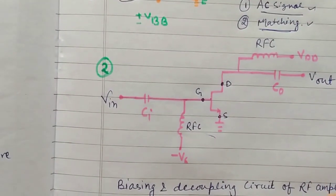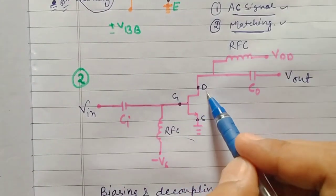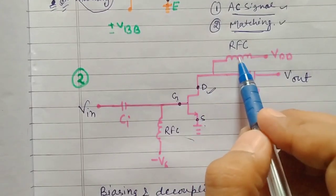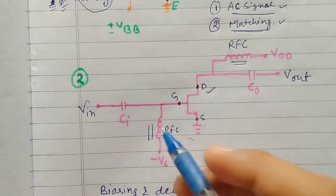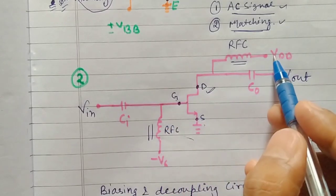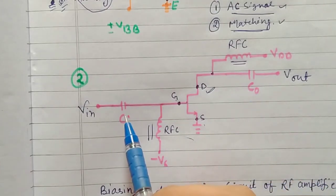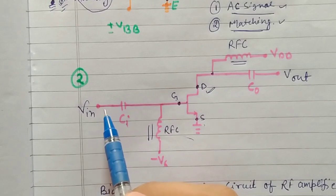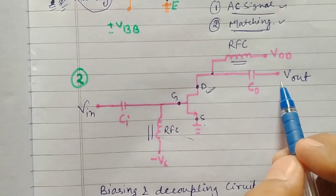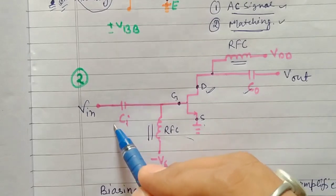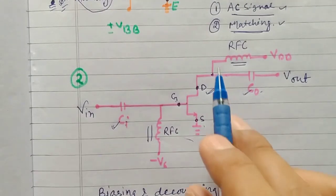The same principles apply for the MOSFET. In place of collector, base, and emitter, we have drain, gate, and source. RFC chokes are used to stop the AC signal so only DC is coupled to the gate terminal and only DC reaches the drain terminal. The two decoupling capacitors CI and C0 block undesired DC from the input supply and prevent unwanted DC from reaching the output terminal — exactly the same approach as explained for the BJT.